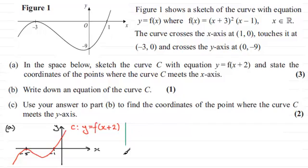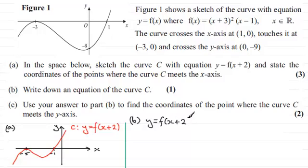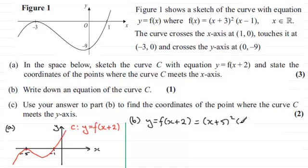For part b, we have to write down an equation of the curve c. What would that equation be for y equals f of x plus 2? All we have to do is replace any x in our original equation with x plus 2. So for the first bracket, in place of x we put x plus 2 then plus another 3, giving x plus 5, all squared. Then in the second bracket, replace x with x plus 2 and you get x plus 2 minus 1, which is x plus 1.